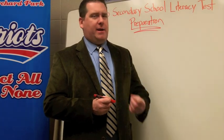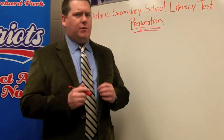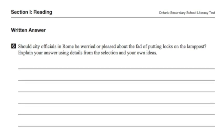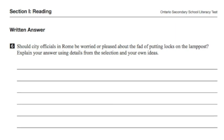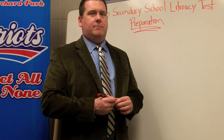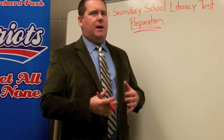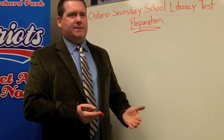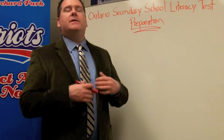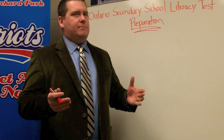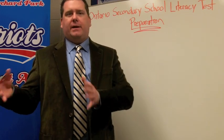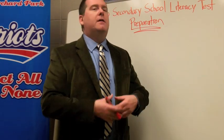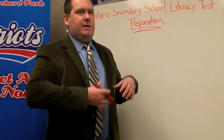One of the things you're going to want to do is be sure that you've actually answered the question you've been asked. If it asks whether city officials in Rome should be worried or pleased about putting the locks on the lamppost, make sure you actually answer that question. One of the ways to express an opinion more effectively is to avoid using 'I think.' Your opinions will seem stronger if you state them as if they're facts. So you might say 'city officials should be worried because' — or 'city officials should not be worried because' — and then use a detail taken directly from the text.